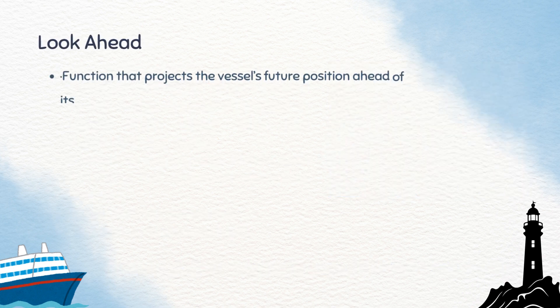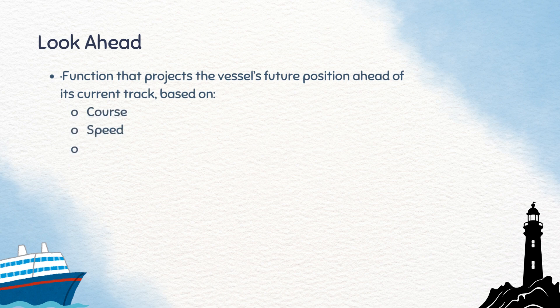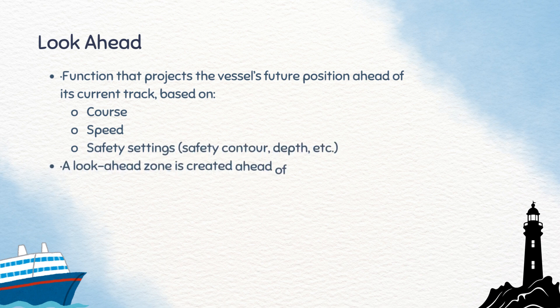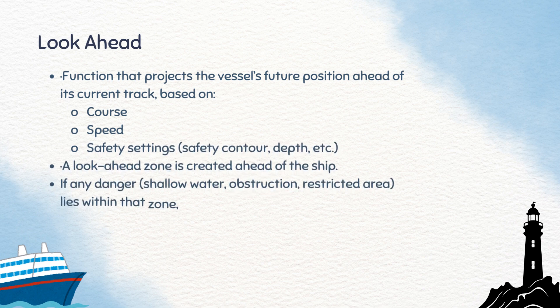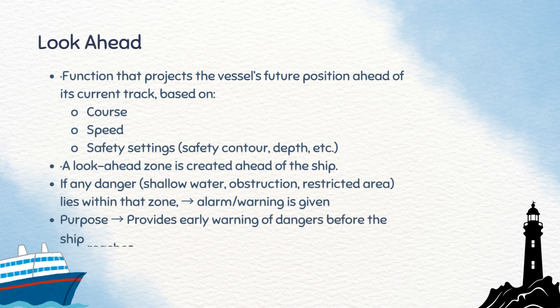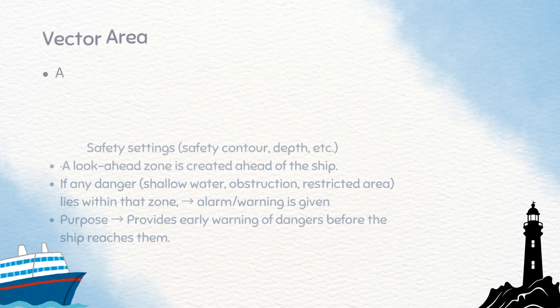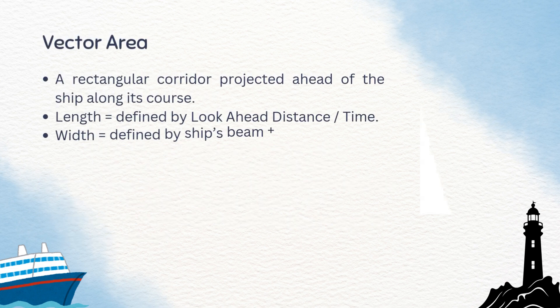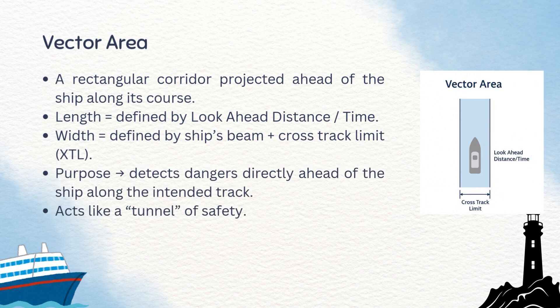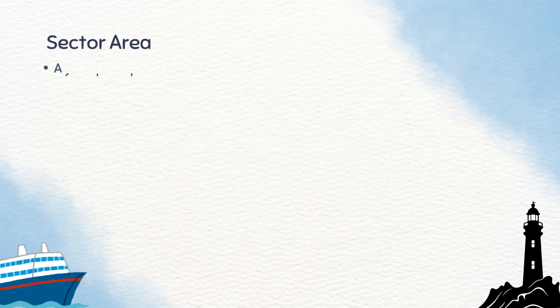The look ahead function projects the ship's future position, considering course, speed, and safety settings. If any danger lies within that zone, the system gives an alarm or warning. Its purpose is to provide an early warning system. The vector area looks like a rectangular corridor projected along the ship's track. Its width is based on beam plus cross-track limit, and its length is based on look ahead time or distance. Think of it as a safety tunnel directly ahead of the vessel.